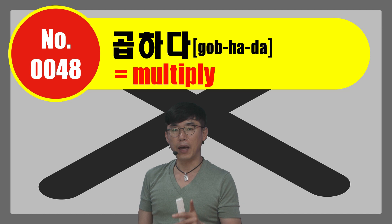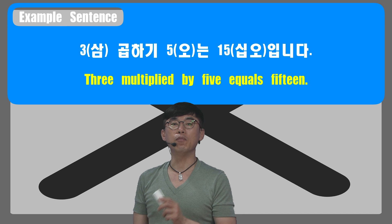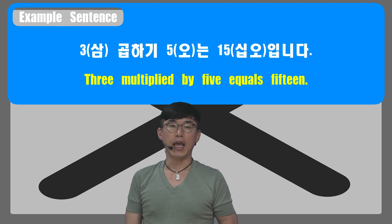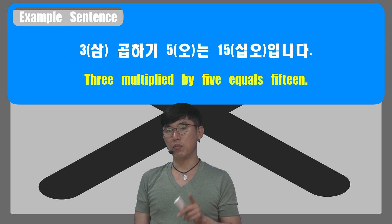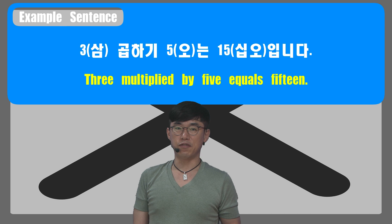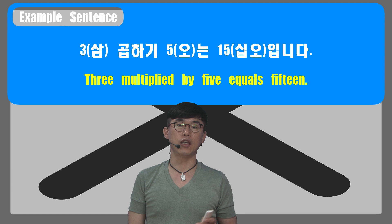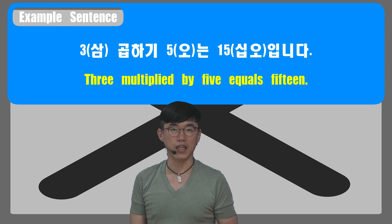Number 48 is 곱하다, which means 'to multiply.' 3 곱하기 5는 15입니다, meaning 3 multiplied by 5 equals 15. As with number 46, 다 is changed into 기 to make the noun form. So 곱하기 means 'multiplication.'